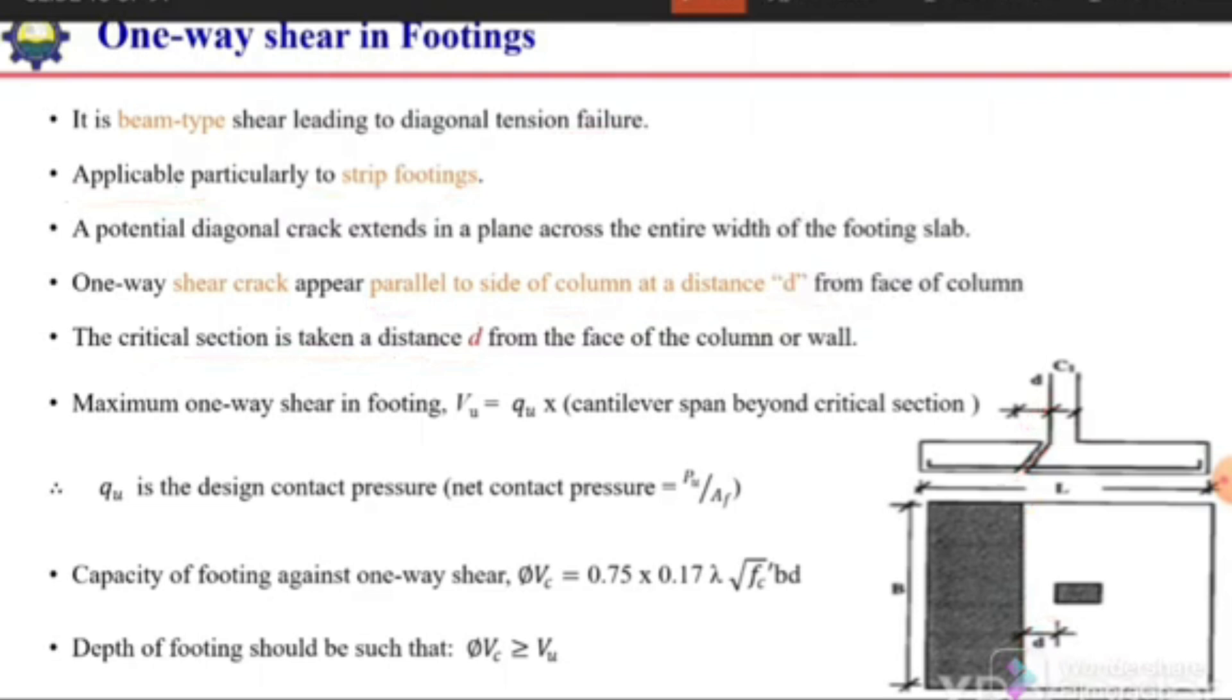The maximum applied one-way shear in footing can be calculated by multiplying the contact pressure with the cantilever span beyond the critical section. This gives the total applied one-way shear on the footing.